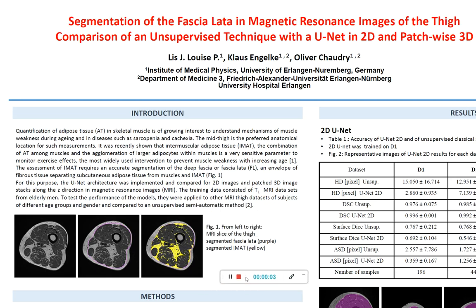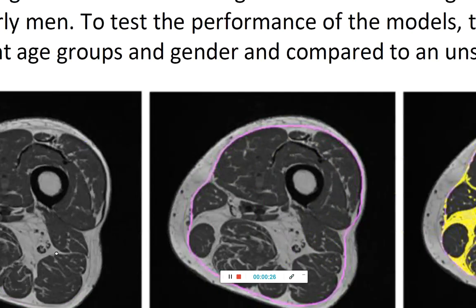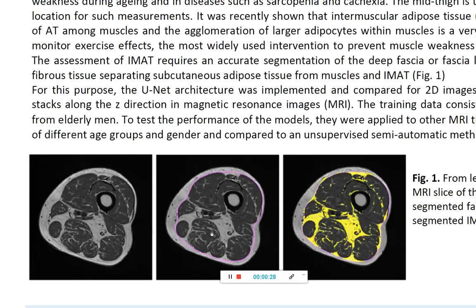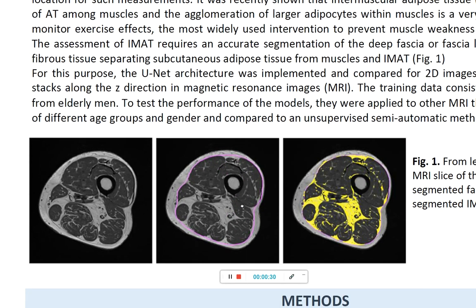Infiltration of adipose tissue in the skeletal muscle is of growing interest to understand mechanisms of muscle weakness during aging and in diseases such as sarcopenia and cachexia. Magnetic resonance imaging of the mid-thigh is the preferred anatomical location for such measurements, as shown in Figure 1 on the left. The aim is to quantify intramuscular adipose tissue, or IMAT, shown in yellow in Figure 1 on the right.